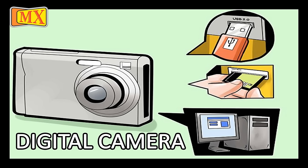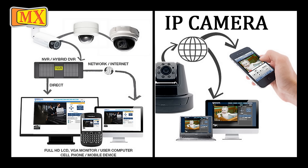Whereas in a digital camera, pictures captured can be viewed immediately and can be transferred to a computer using USB or a memory card. An IP camera captures images the same way as any digital camera. What makes it different is its ability to compress files and transfer them to a computer or the internet.